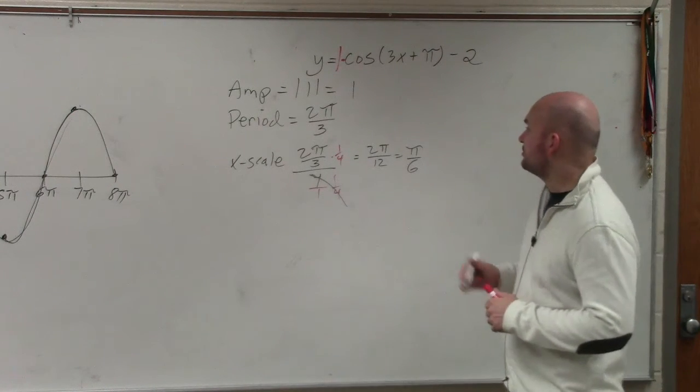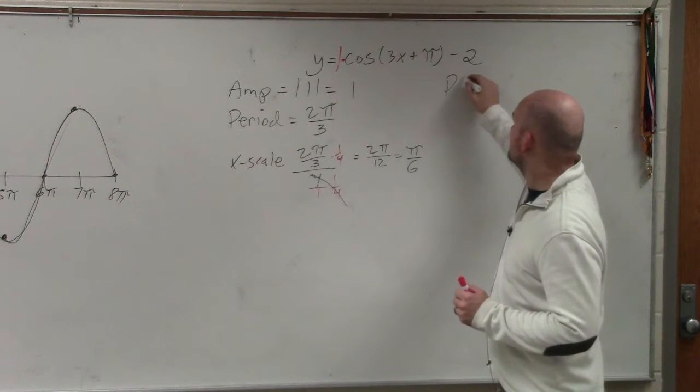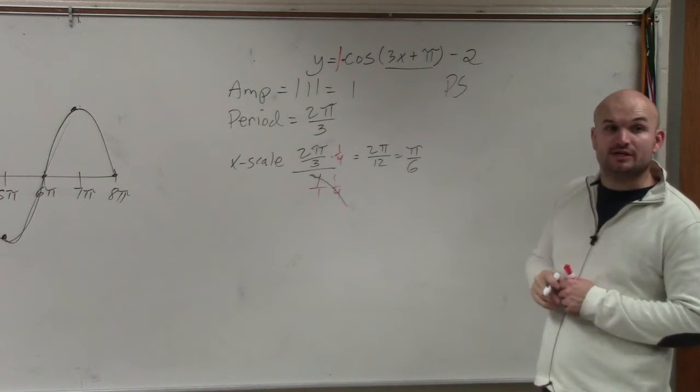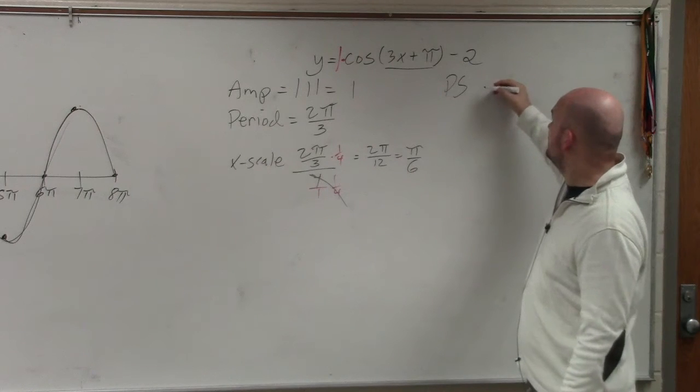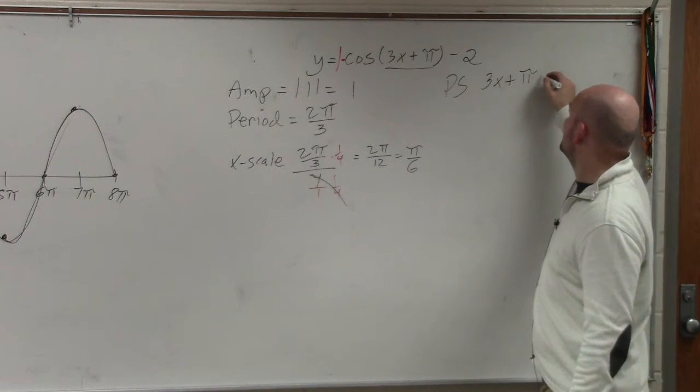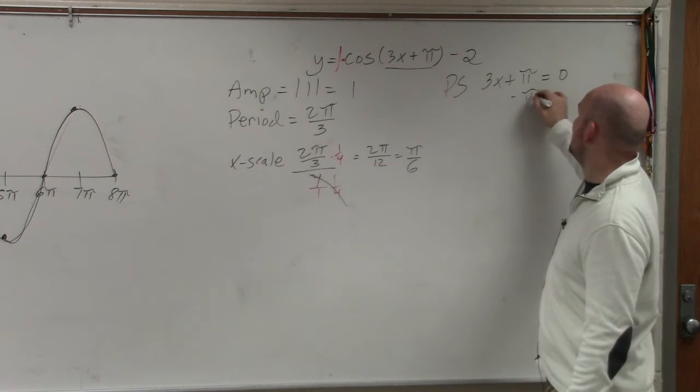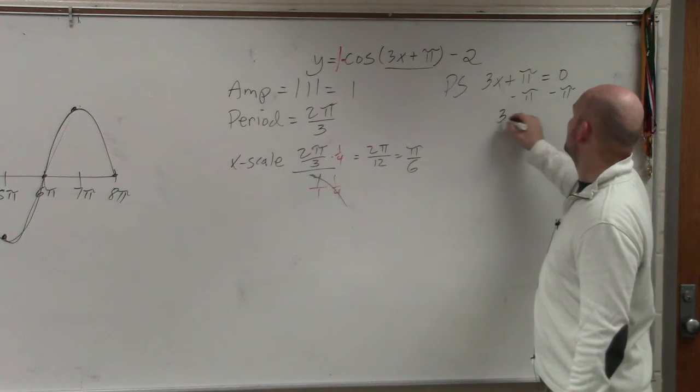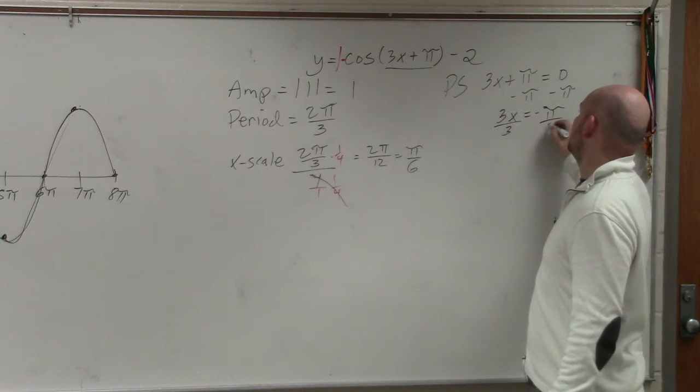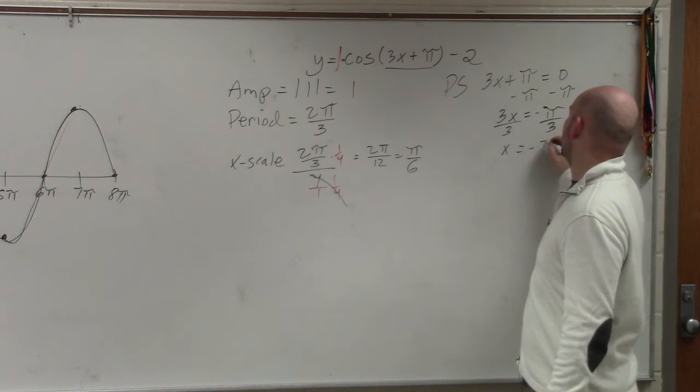The next thing is going to be your phase shift. Take everything that's inside of there and set it equal to 0. That's going to be your new initial start. So phase shift is going to be 3x plus π equals 0. So I subtract π. 3x equals negative π. Divide by 3, divide by 3. x equals negative π thirds.